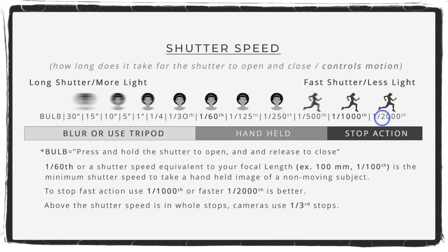The important numbers to note: 1/60th of a second is the minimum shutter speed when hand-holding your camera and shooting a non-moving subject. Shooting at 1/125th is better, since even at 1/60th some movement can cause blur. Another guideline is that the minimum shutter speed should equal your focal length — so if your lens is at 55mm, you need at least 1/55th of a second.